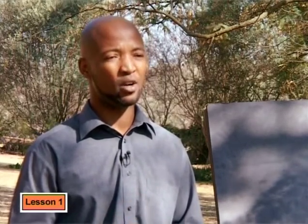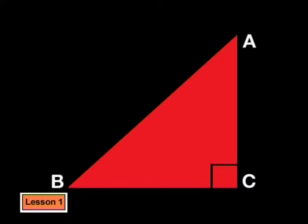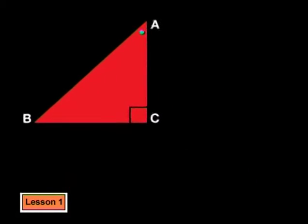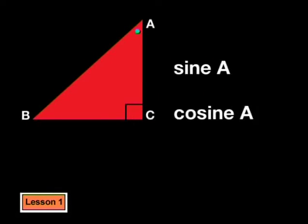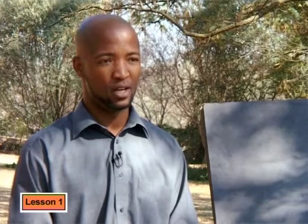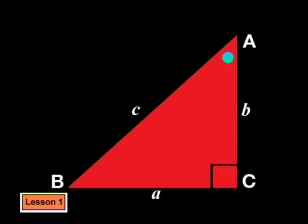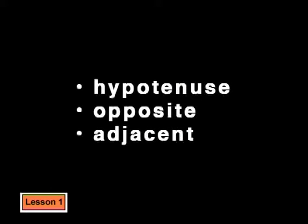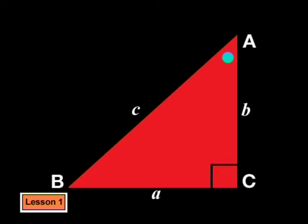Sine, cos and tan are the ratios of the sides of a triangle. We can use them to help us calculate the values of sides and angles of a triangle that are not given to us. We define these ratios in relation to a specific angle in the triangle. The three sides of a right-angled triangle can be defined as the hypotenuse, the opposite side, and the adjacent side. The hypotenuse is easy — it is always the side opposite the right angle.